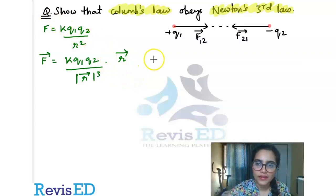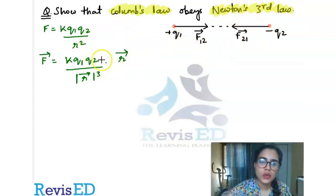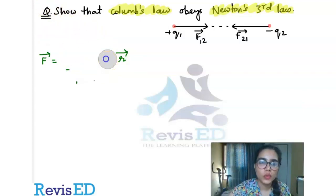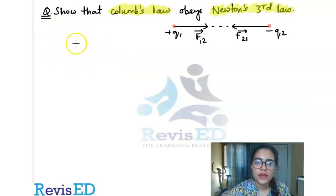For Newton's third law, we say that every action has an equal and opposite reaction. This is what Newton's third law states. So keep this equation in mind, and we have discussed this equation in terms of position vector also. Let us see what this equation is actually saying.